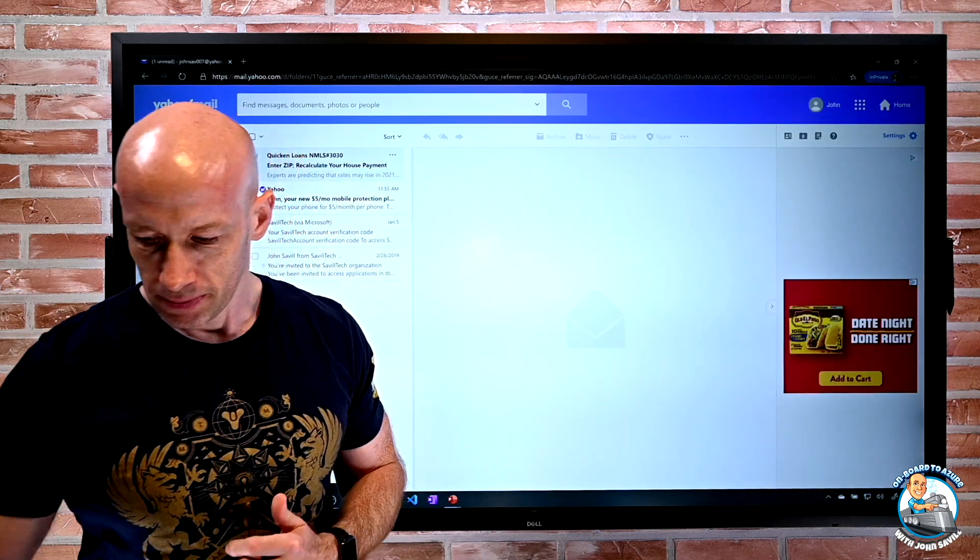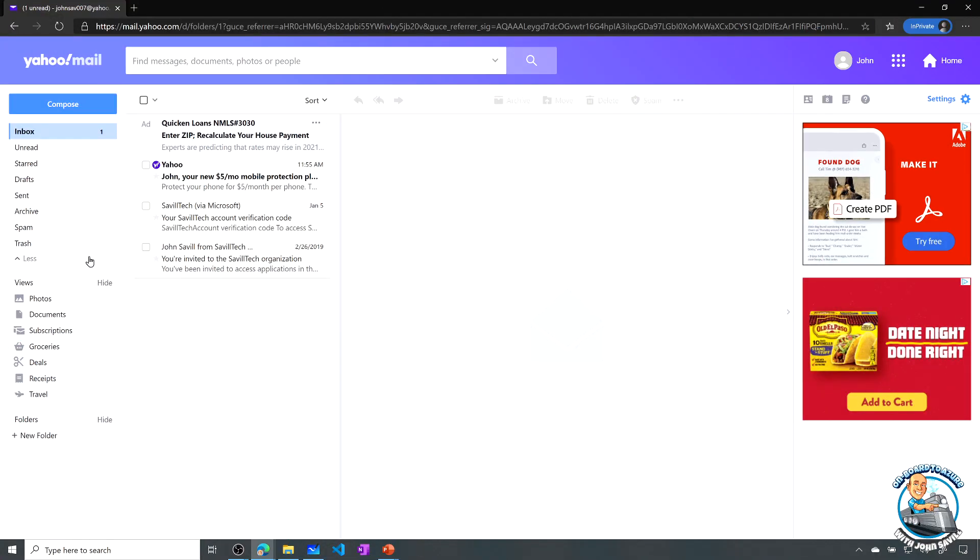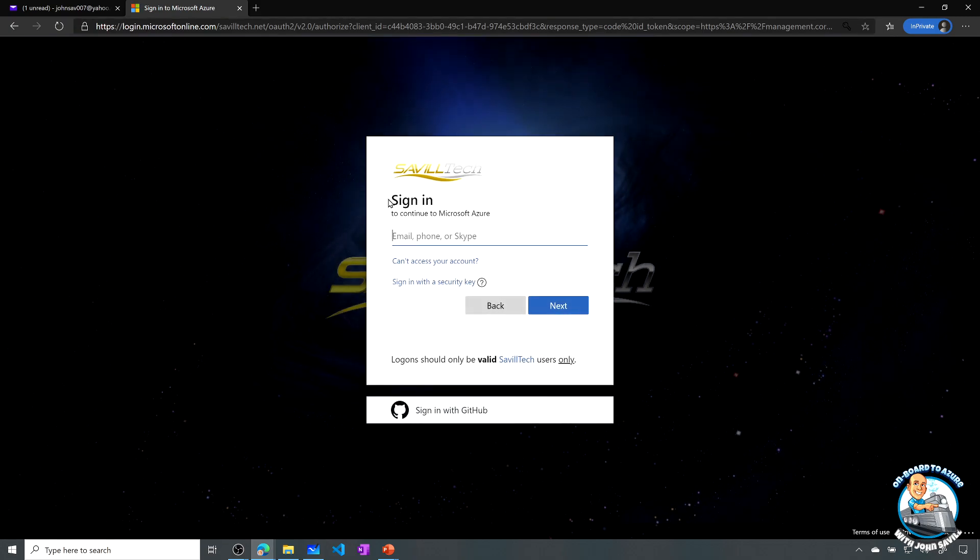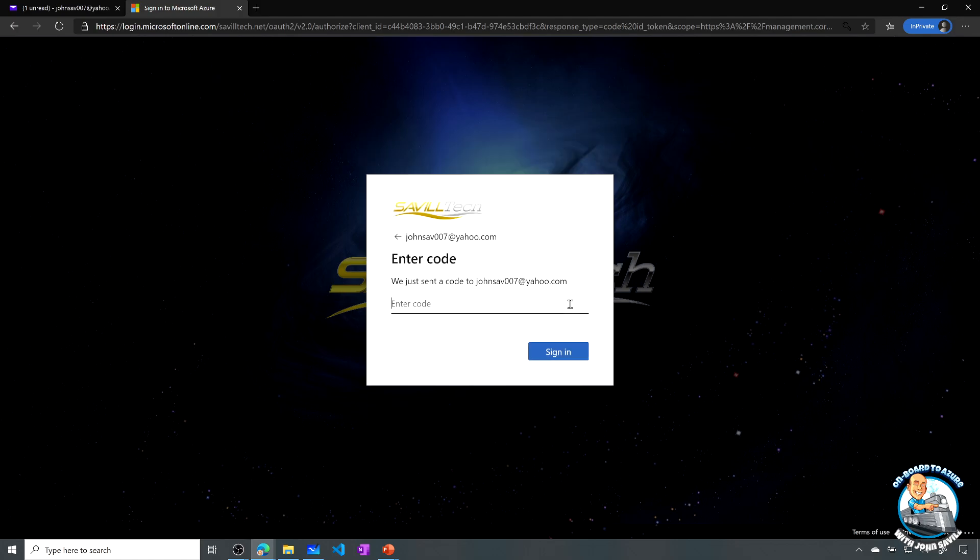And I can show this super quickly. So over here, I'm actually logged in as a Yahoo Mail account. And obviously, I get all this advertising everywhere. And then what I'm going to try and do is go to Azure and I'll use the SavileTech.net Azure AD tenant. So I'm giving it a domain hint. And then I'll actually try and log in as my Yahoo account. So I'll say, well, johnsav007 at yahoo.com. So I've already added that as a guest user. So what it's saying is, hey, look, we're sending a code to your mailbox.